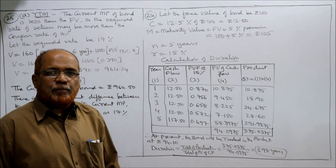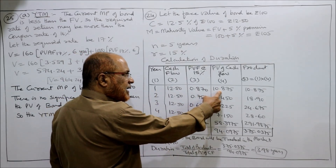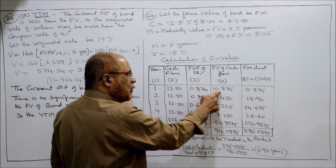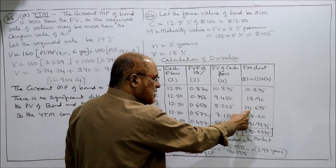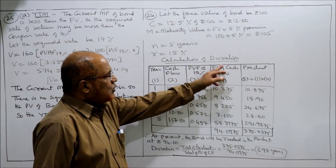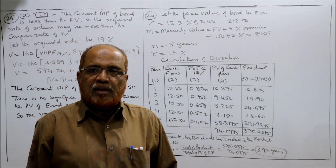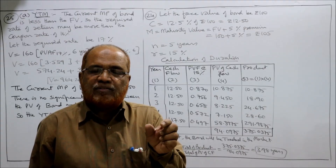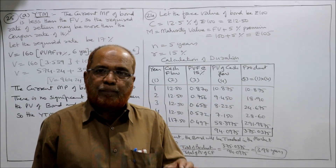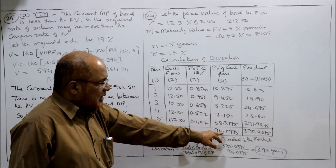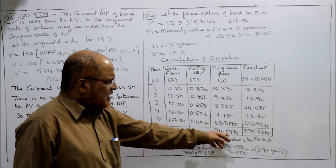Multiply the cash flow with PV factors to get the PV of cash flow. The product means year multiplied by PV of cash inflow: 1 × 10.875, 2 × 9.45 = 18.9, 3 × 8.225, and so on. Take the total of the products and the total of PV of cash flows. The present value of the bond is the total of the present value of cash flows, which comes to 94.0975.